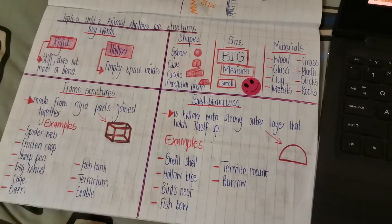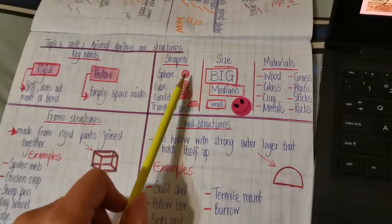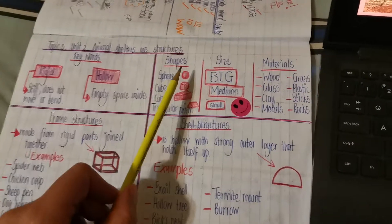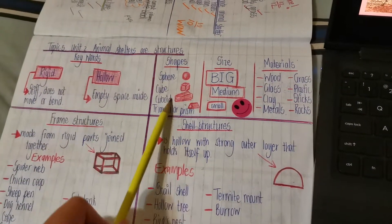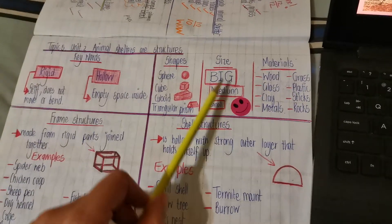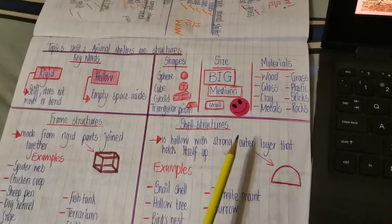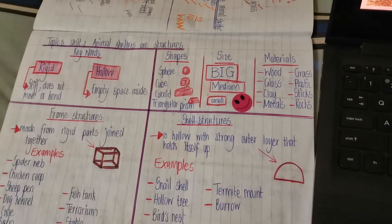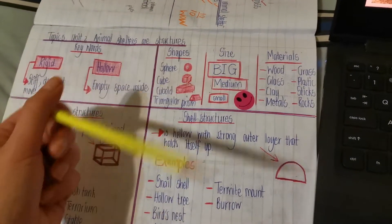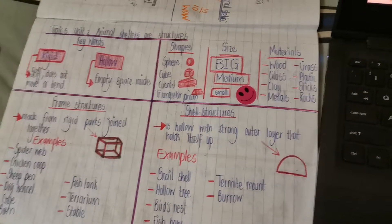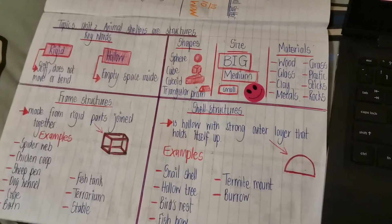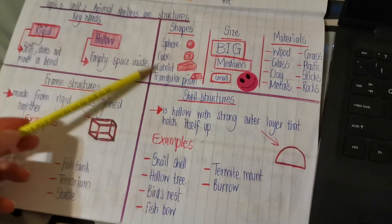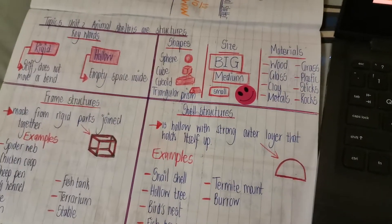If you have to describe animal shelters, we're going to look at the shape of the shelter, the size — is it big, medium, or small? — and then what materials they used to build it: wood, glass, clay, metals, grass, plastic, sticks, rocks, and many more. Just like there are many more shapes — those are only a couple of examples.